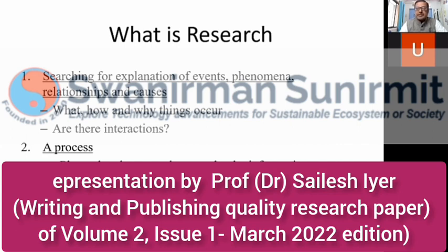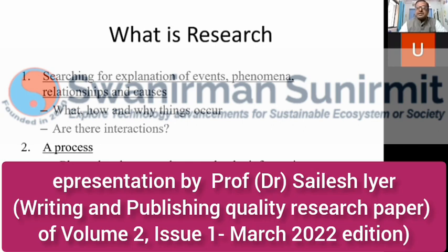A review paper is where you collect existing methods published by different scholars and academicians, study them, and find the gaps. A research paper, on the other hand, involves proposing a methodology, algorithm, or system to deal with the problem and provide an alternative solution beneficial to society. The criteria should be clear — is it going to increase speed, search capacity, accuracy, or reduce time required for search? These parameters need to be defined in your paper.